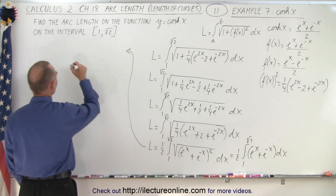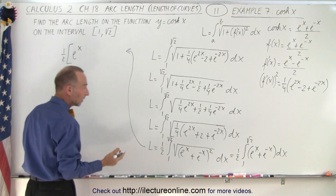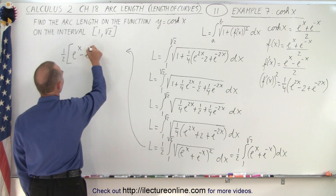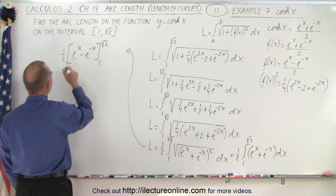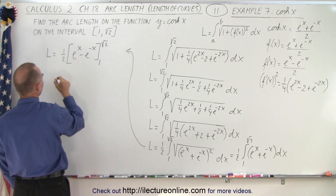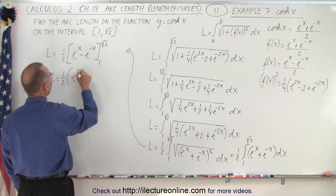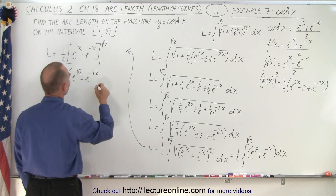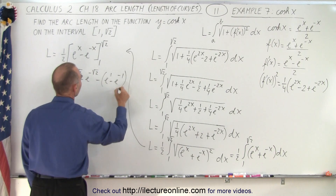Now we integrate. So we have 1 half times the quantity e to the x — because the integral of e to the x is e to the x — and the integral of e to the minus x would be minus e to the minus x. That's evaluated from 1 to the square root of 2. Plugging in the upper limit: e to the square root of 2 minus e to the minus square root of 2. Plugging in the lower limit: minus e to the first minus e to the minus first.